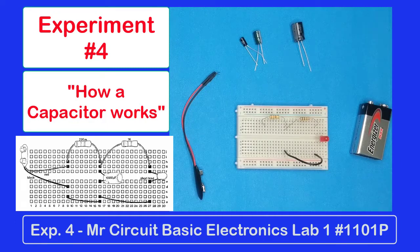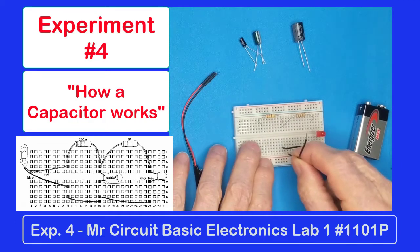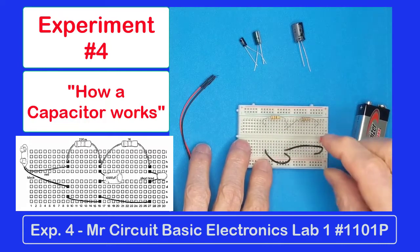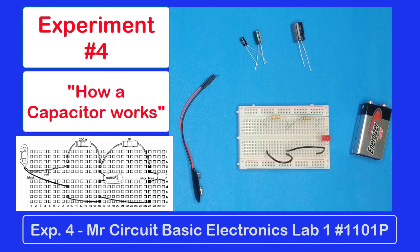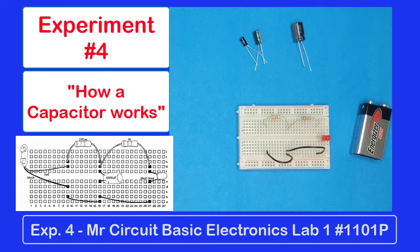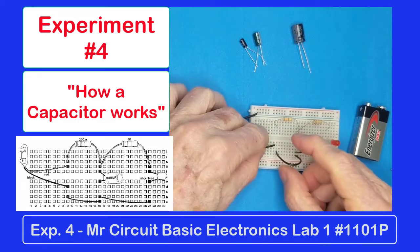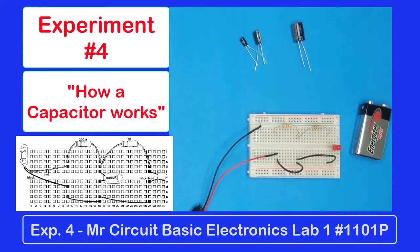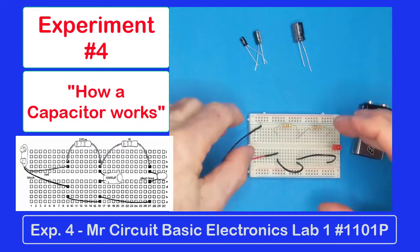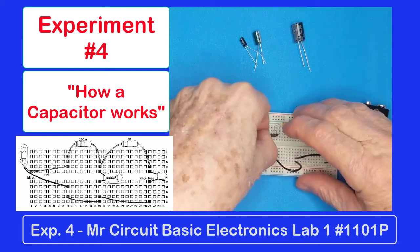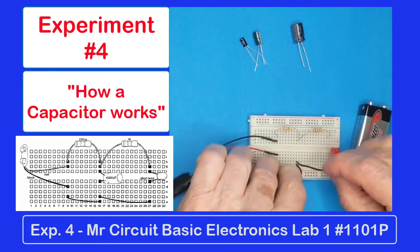Then we need to put another jumper wire from 16 to 9. So we plug it in at 16 and we plug it in here at 9, matching up the pictorial. Next thing we're going to install is the battery snap. The black of the battery snap goes into row 9 with the jumper wire. And then the other lead, the red lead, goes with the 220 ohm resistor.